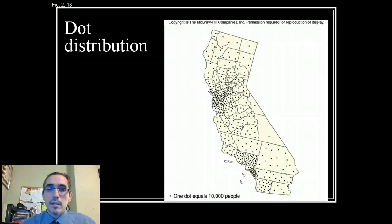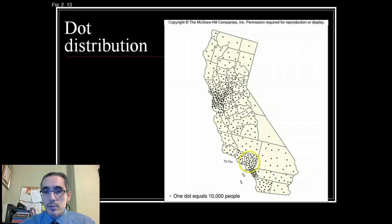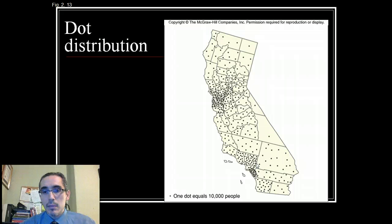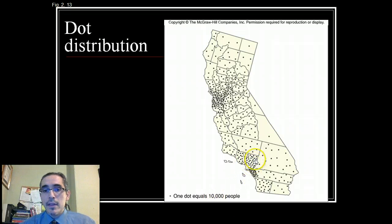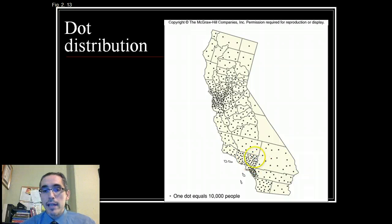Dot distribution is important, but it's also important to understand how it's organized. In this case, we have a dot density map showing population in counties in California. The dots are concentrated within each county because they represent only the information within that county. For example, Los Angeles County has around 10 million people, so it has 10 million divided by 10,000 dots inside it. The exact placement isn't really important — the point is to represent the overall sense of density, not actual locations, which could be misleading since most LA residents are near the coast, not spread evenly across the county.